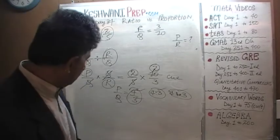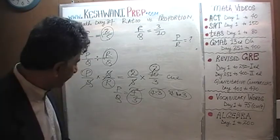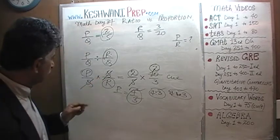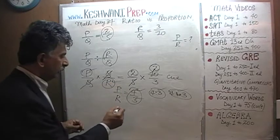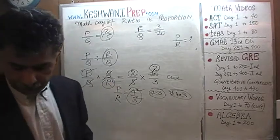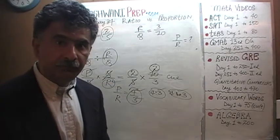I'll see you tomorrow. Not P to Q, sorry. I meant to say P to R. Q was gone. P to R is 4 to 3. I'll see you tomorrow. Bye now.